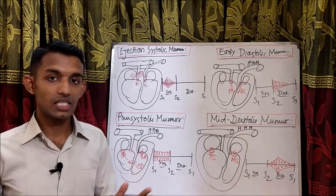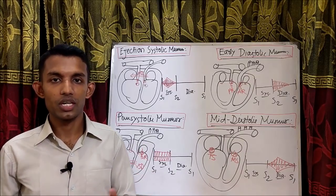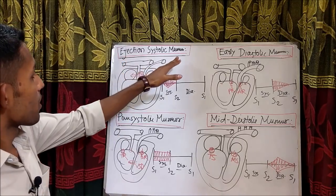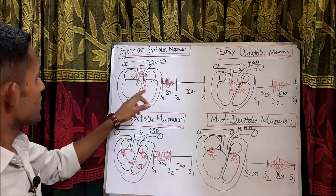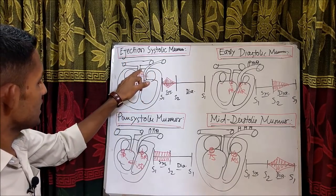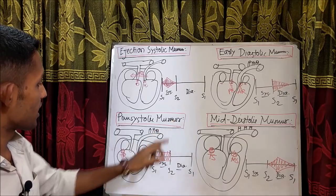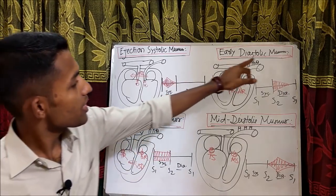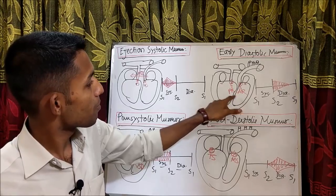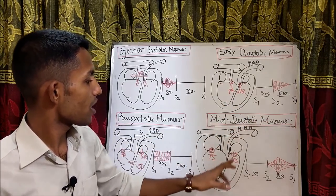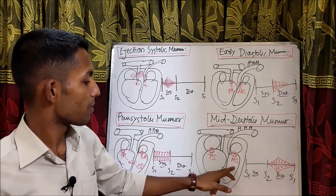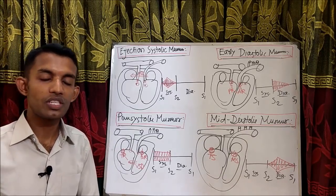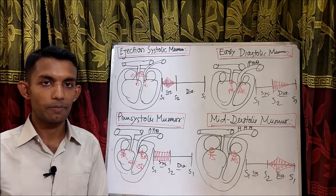So this is the gross idea of murmur. Ejection systolic murmur: I will get in AS, PS, and ASD. Pansystolic murmur: I will get in MR, TR, and VSD. Early diastolic murmur: I will get in AR and PR. Mid-diastolic murmur: I will get in MS and TS — mitral stenosis and tricuspid stenosis. These are the basic four types of murmur.